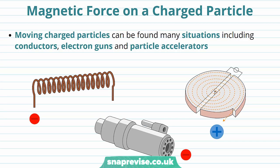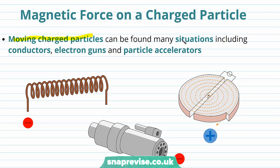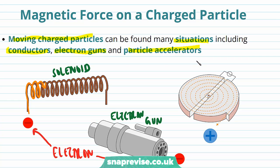Let's think about the magnetic force acting on a charged particle. Moving charged particles can be found in many situations including conductors, electron guns, and particle accelerators. For example, as a current goes through a solenoid, electrons are travelling through the solenoid. Electrons are also fired out of electron guns, and moving charged particles are also present in particle accelerators like the Large Hadron Collider.